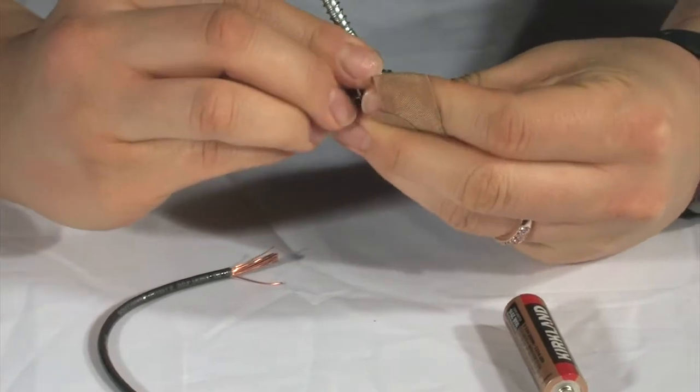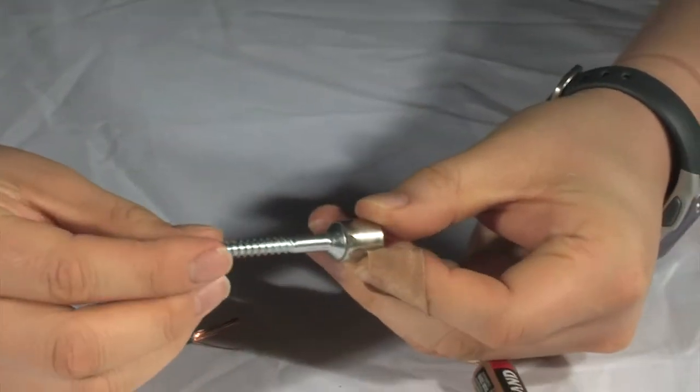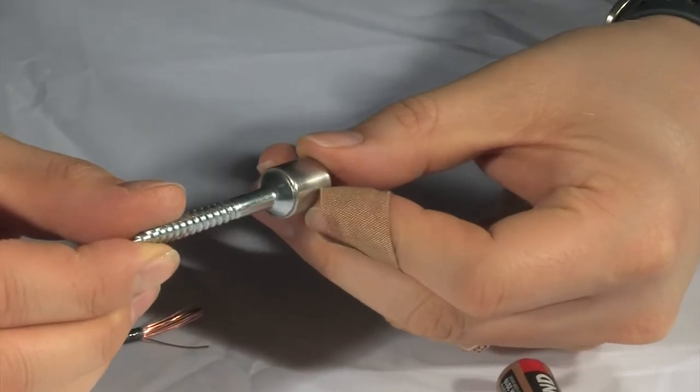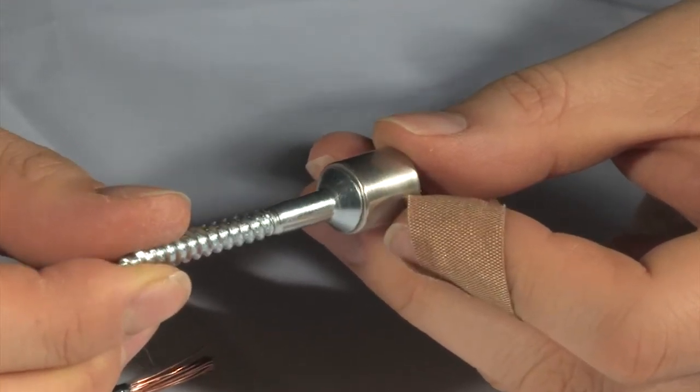Attach the screw to the flat end of the magnet, and center it as best you can, like this. The more centered and balanced the screw is on the magnet, the better.